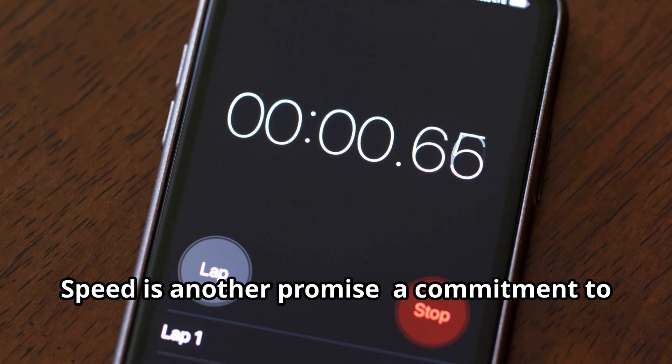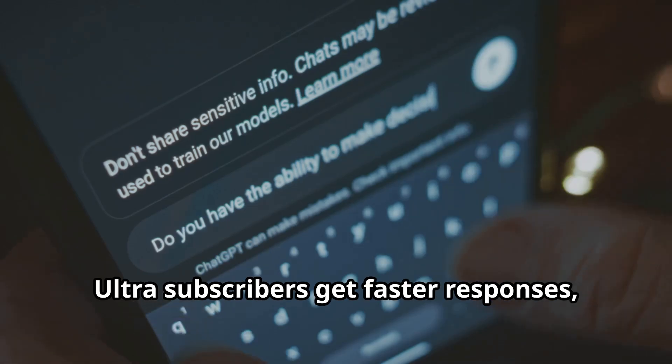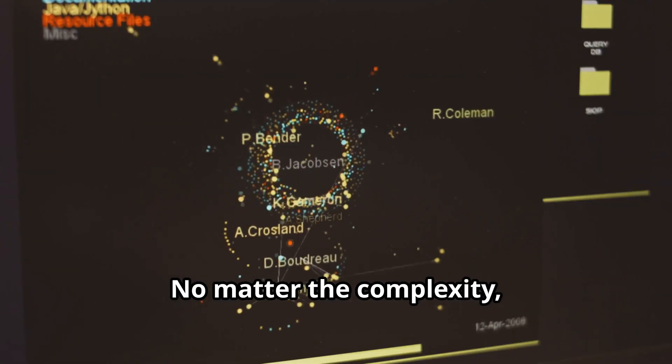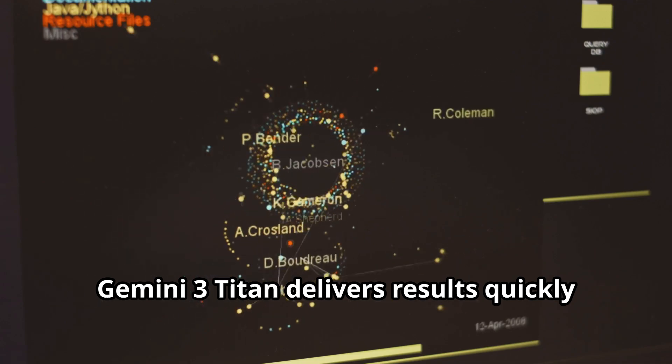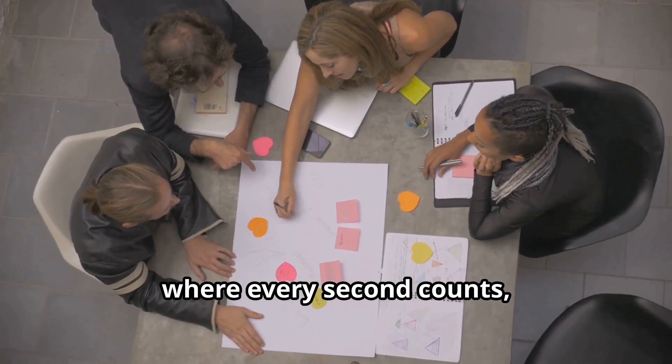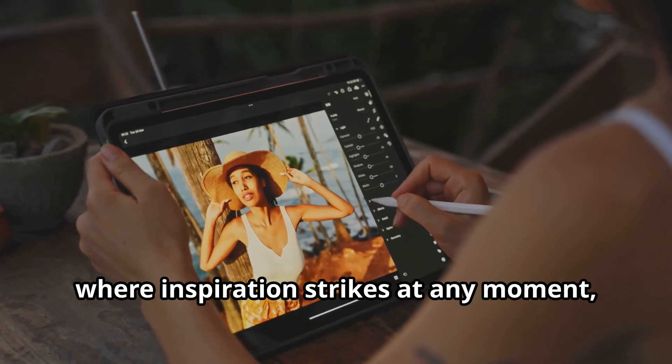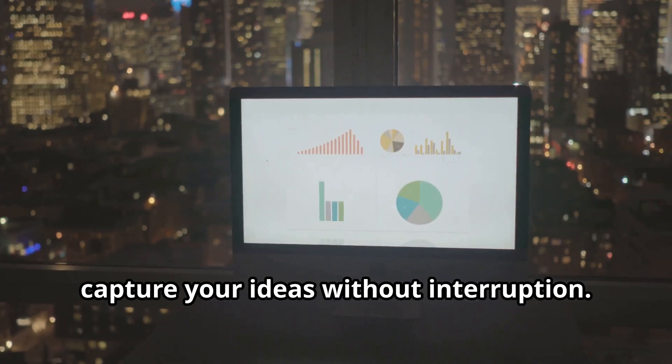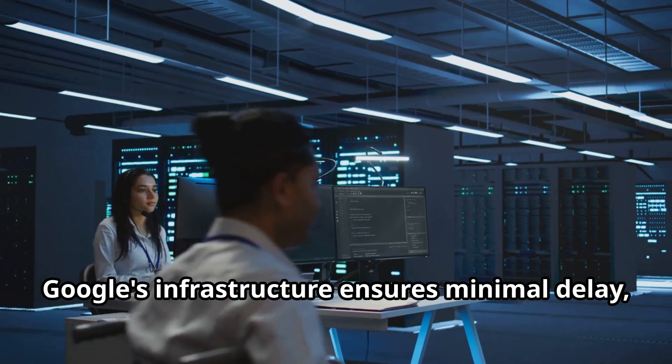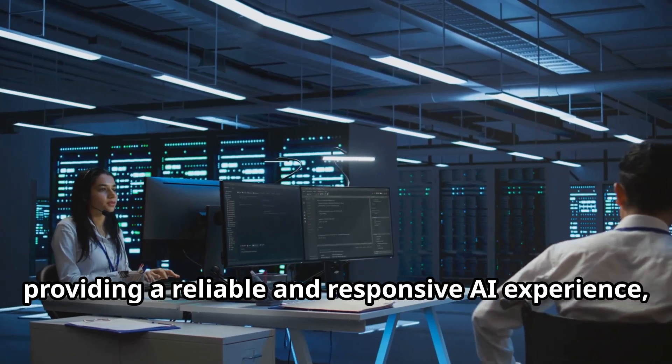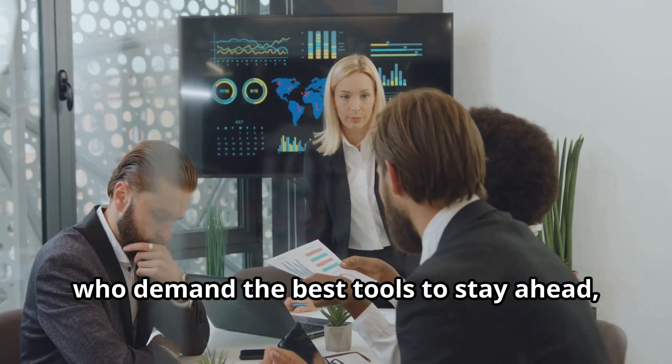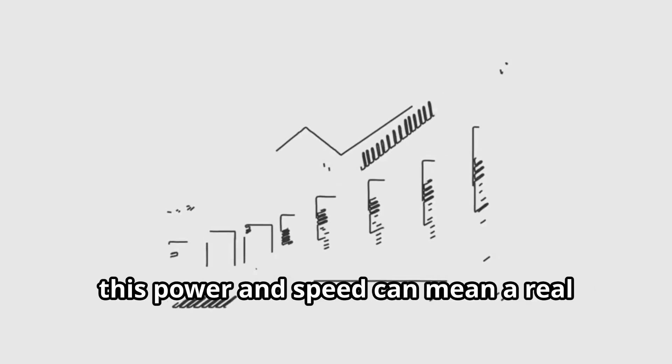Speed is another promise, a commitment to efficiency and responsiveness. Ultra subscribers get faster responses, ensuring a seamless and productive experience even for demanding tasks. No matter the complexity, Gemini 3 Titan delivers results quickly and efficiently. For real-time brainstorming, where every second counts, or creative work, where inspiration strikes at any moment, that low latency matters. It allows you to stay in the flow and capture your ideas without interruption. Google's infrastructure ensures minimal delay, providing a reliable and responsive AI experience, keeping your workflow smooth. Say goodbye to frustrating delays and hello to seamless productivity. For professionals who demand the best tools to stay ahead, this power and speed can mean a real productivity boost. Unlock your full potential with Gemini 3 Titan.